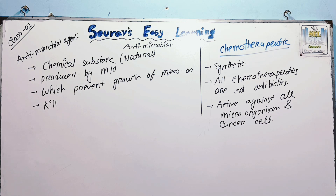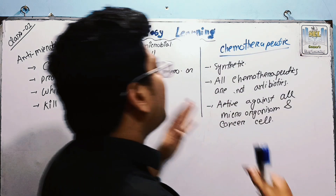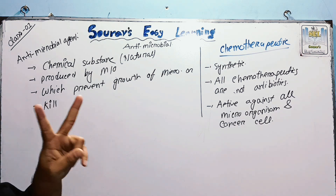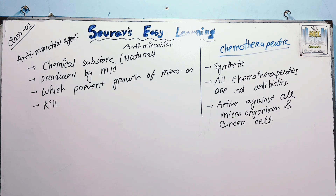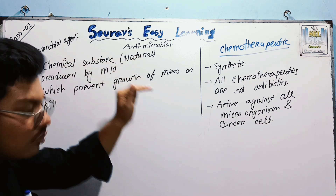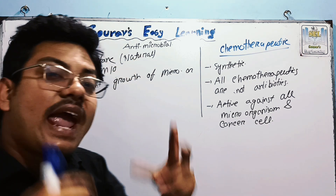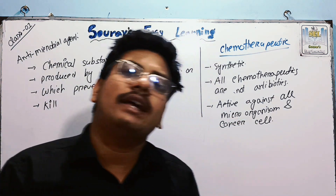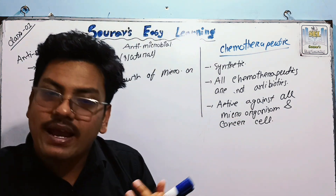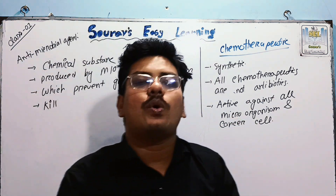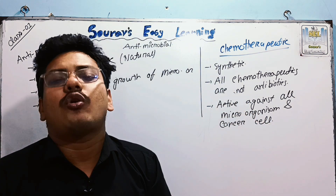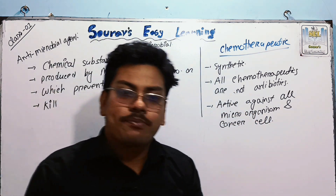We have antibiotics as our antimicrobial drug. Antimicrobial covers anti-bacterial, anti-viral, and anti-protozoal agents. Microbial organisms include viruses, bacteria, and protozoa — these are the microorganisms targeted by antimicrobial drugs.